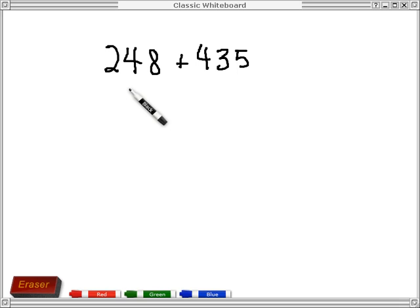So I want to illustrate the method of compensation for addition. And so the idea of compensation is that if I looked at this problem, I might see that if I had this, instead of 248, if I were actually adding 250, this problem would be a whole lot easier. So let's make this a 250.